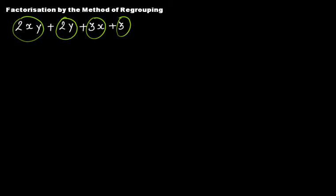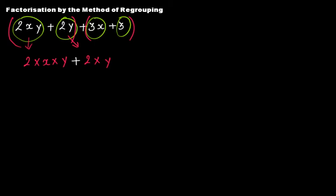In this case, what you have to do is take these two terms together and take these two terms together. Break down the first term into its irreducible factor form: it is 2 multiplied by x multiplied by y, then a plus sign. Break down the second term: it's 2 multiplied by y, then a plus sign. The third term is 3 multiplied by x. And the fourth term, 3, is only 3.